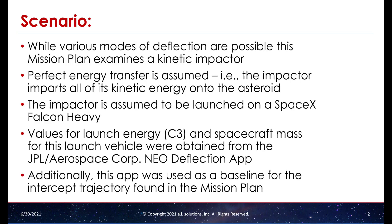While there are different types of deflection methods, the mission plan shown here uses a kinetic impactor, which is a spacecraft that hits the asteroid to alter its course. For simplicity's sake, it is assumed that the spacecraft perfectly transfers its energy to the asteroid. Additionally, the mission plan assumes that the SpaceX Falcon Heavy is used to launch the impactor spacecraft, because the values for launch energy C3 and correlated spacecraft mass for the Falcon Heavy were available as part of the NASA JPL and Aerospace Corporation near-Earth object deflection app. This app was also used as a baseline with which the trajectory found in FreeFlyer could be compared against.